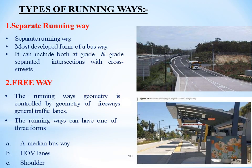There are types of running ways. First, the separate running way is the most developed form of a busway; it can include both at-grade and grade-separated intersections with cross streets. Second is the freeway running way, whose geometry is controlled by the geometry of freeway general traffic lanes. A running way can have one of three forms: a median busway, HOV lanes, and shoulder.